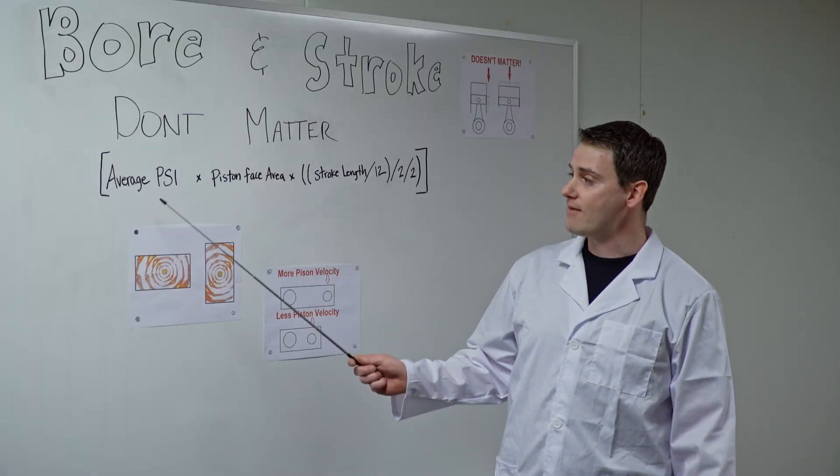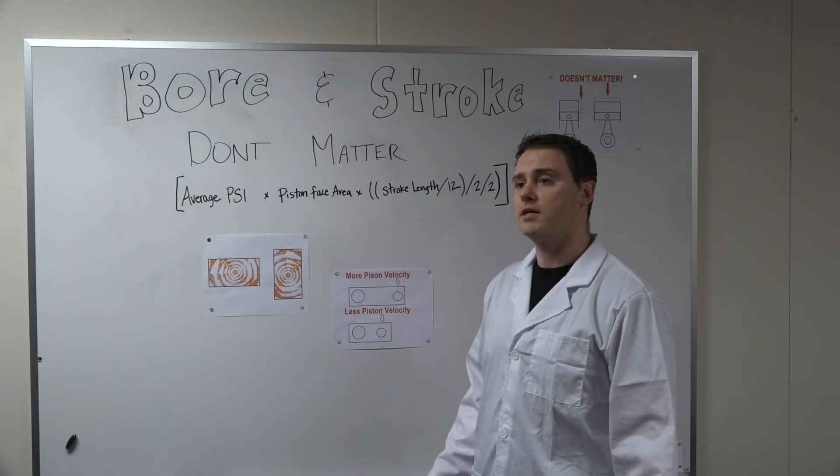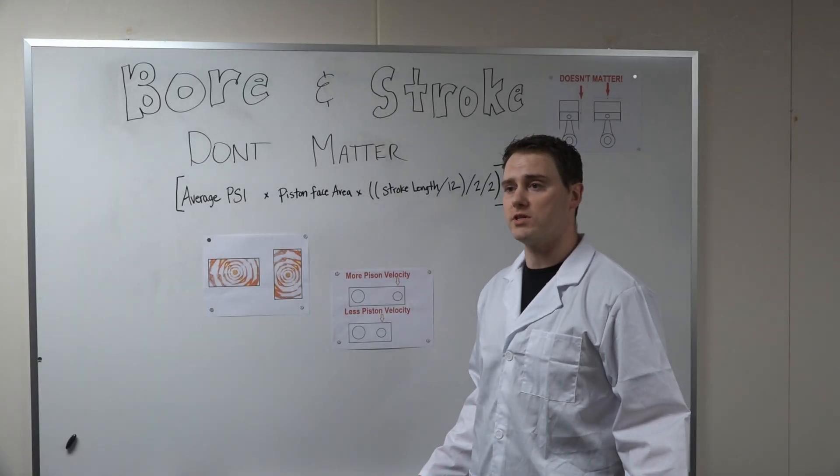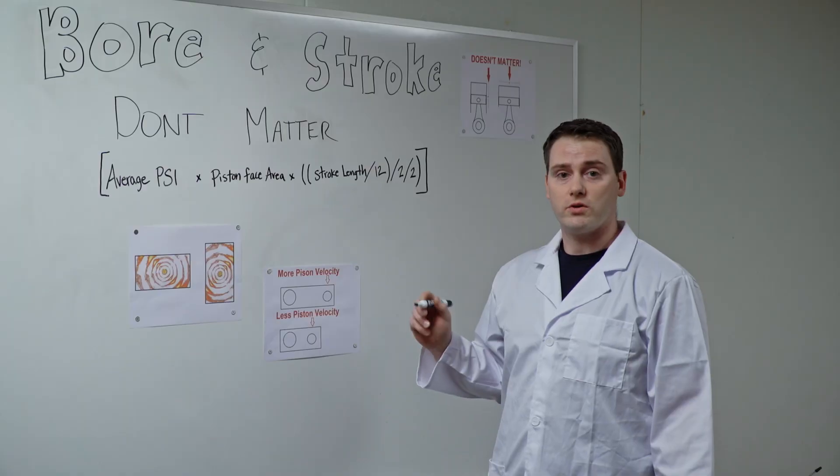Now on our formula, we take this average PSI and we multiply it by the piston face area. To get that, we'll use the example of a 427 big block Chevy, which has a diameter of 4 and a quarter inches.